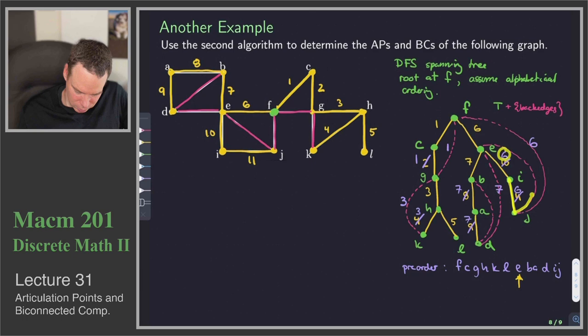And then this back edge should get a 6 as well, so that's a 6. And that's every back edge coming from E.